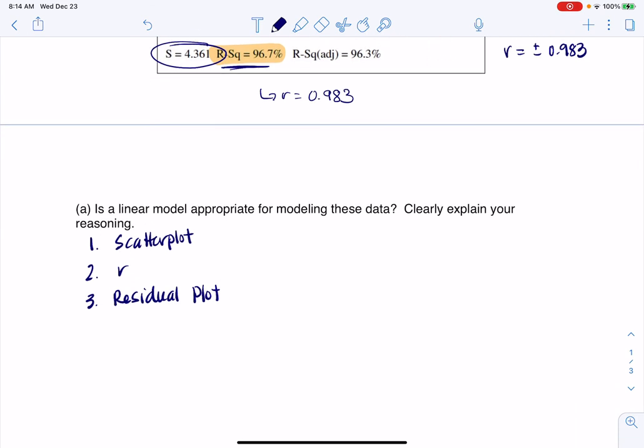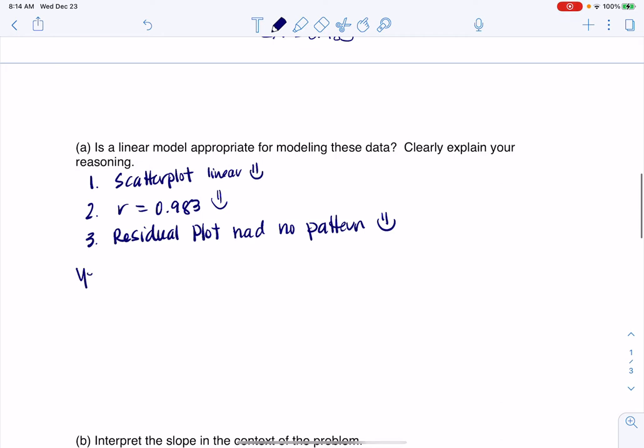So my scatter plot was linear, I would give myself a happy face there. r was 0.983, that is strong, I would give myself a happy face there. And the residual plot had no pattern. And I would give myself a happy face there. So I would say yes, the linear model is appropriate.